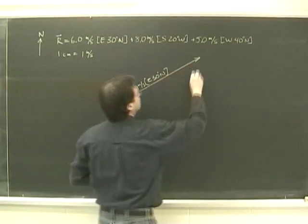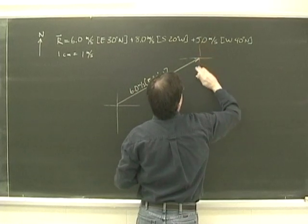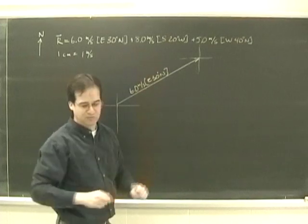Now we're over here. We draw lightly another bearing, hopefully straight. And what I have to draw now is eight meters per second south 20 west.